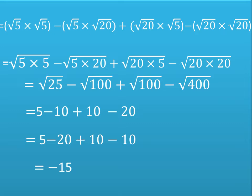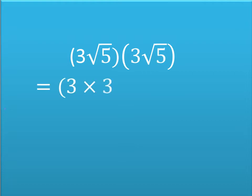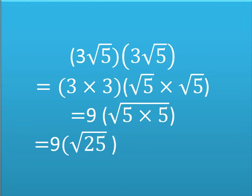So we have 5 − 20 plus 10 − 10, which gives us −15. Our answer −15 is a non-surd value, confirming that √5 − √20 is the conjugate of √5 + √20. Now taking 3√5 multiplied by its conjugate 3√5, we get 3 × 3 into √5 × √5, which equals 9 × √25 = 9 × 5 = 45. Note: when you multiply a surd with its conjugate, you will always have a rational number.